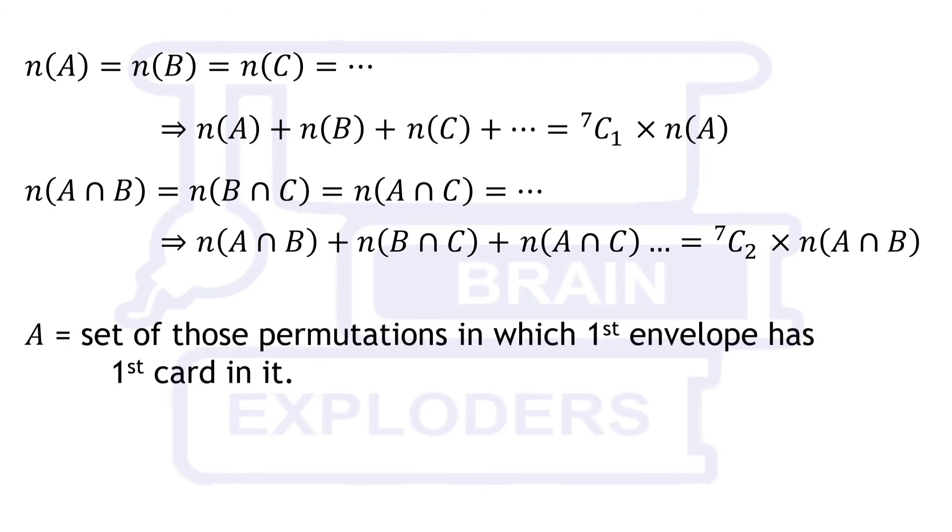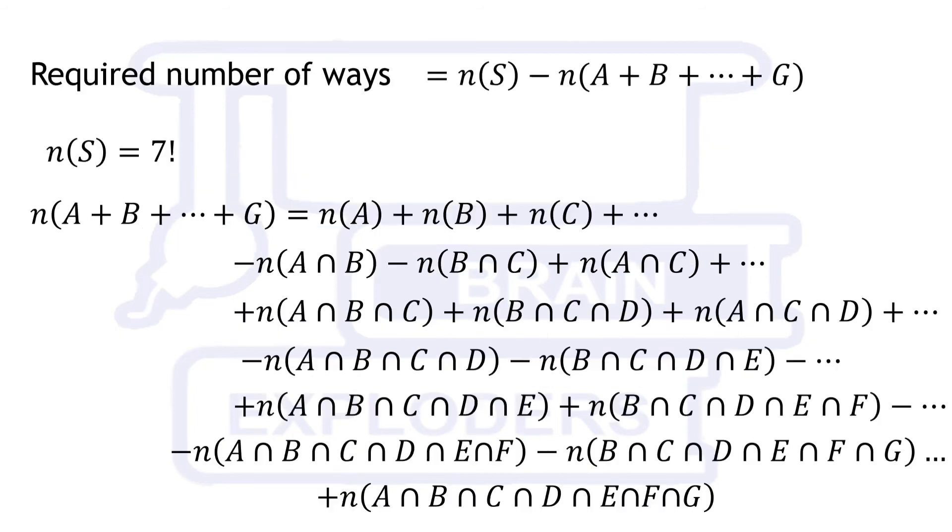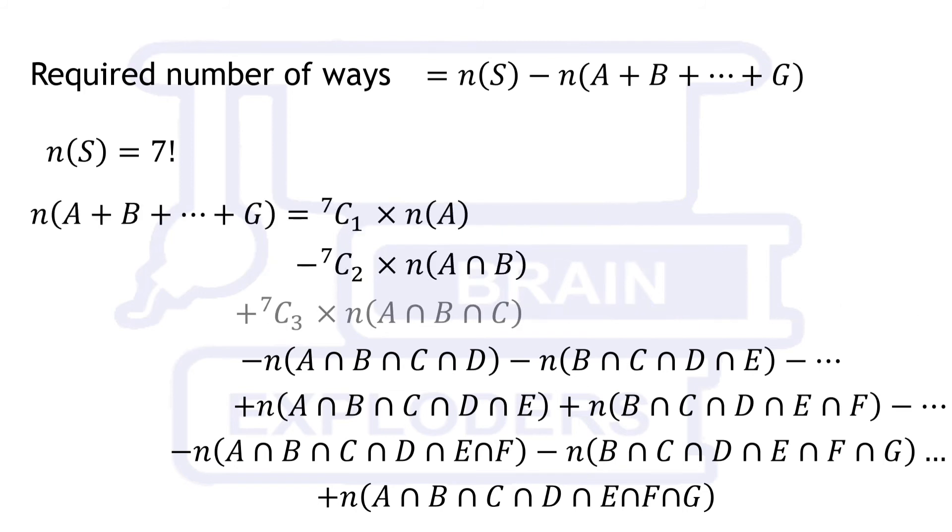In set A, one card is fixed, rest can be placed in 6 factorial ways. In A intersection B, two elements are fixed and rest can be placed in 5 factorial ways. And similarly, these values can be easily calculated for all other sets and their intersections.